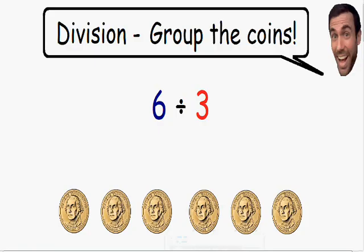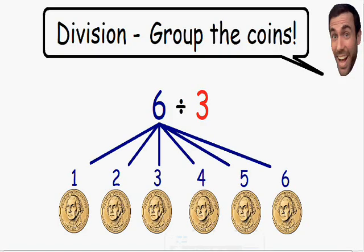Here in this example we have 6 divided by 3. So we're starting with the number 6, which is why we have 6 coins. And these 6 coins are being divided by 3.